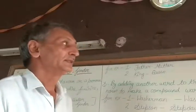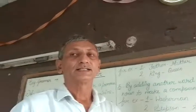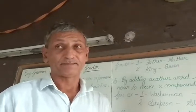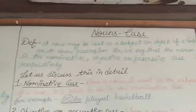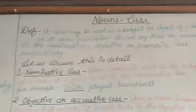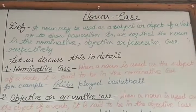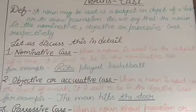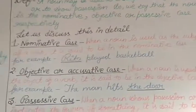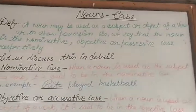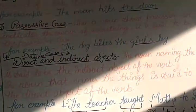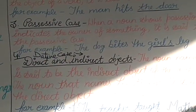Let's talk about nouns — the different uses: the case. A noun may be used as the subject or object of a verb, or to show possession. So the noun can be used as nominative or subjective case, objective case, possessive case, or dative case. Let's take them one by one.